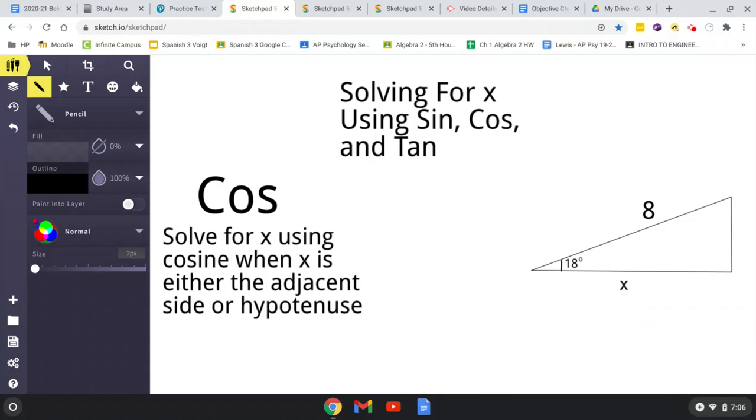So, let's start with cosine. Cosine, if you have a given angle measure in a right triangle, and you have either the hypotenuse or the adjacent side to the given angle, you use cosine to find x.